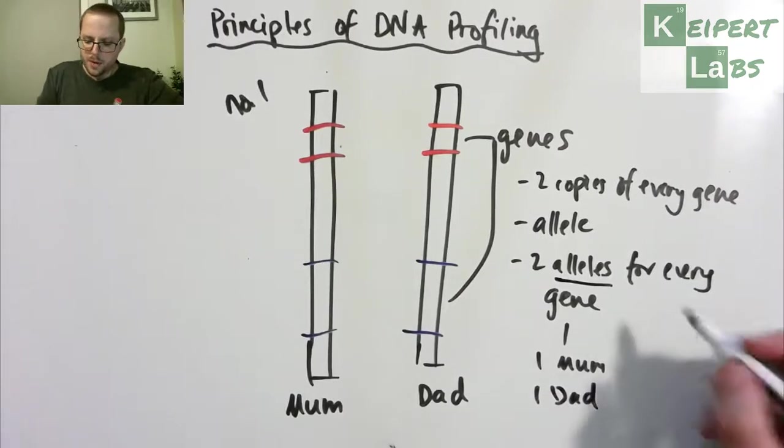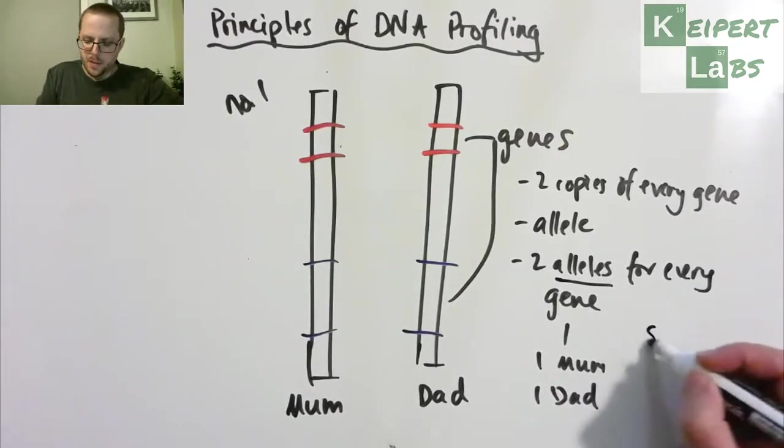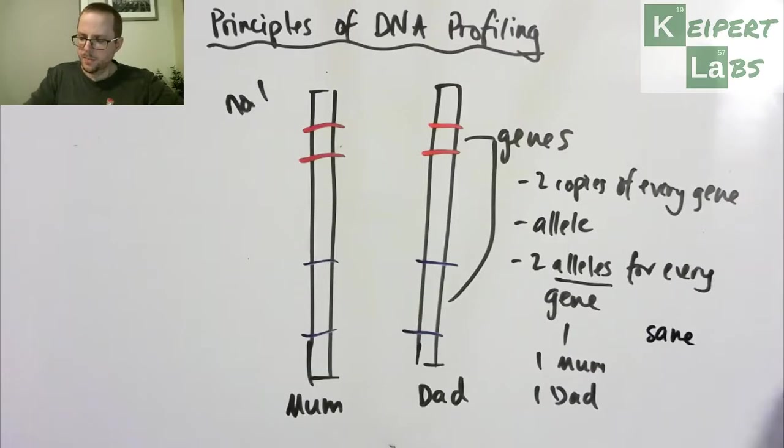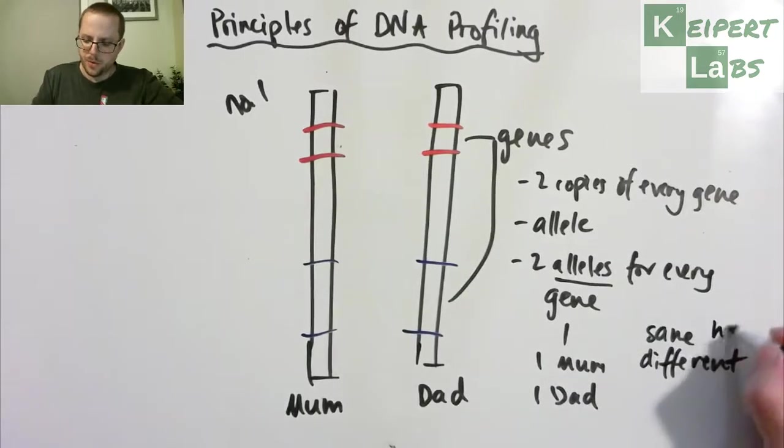They can be the same as each other, so same versions of them, or they can be different. We use particular words to describe that. Same, we use the word homozygous and different, we use the word heterozygous.